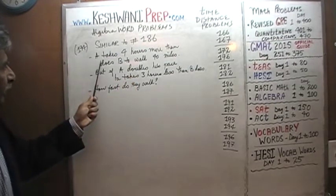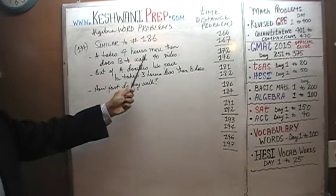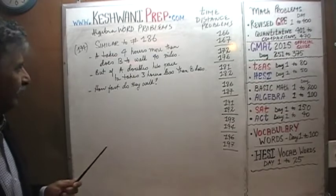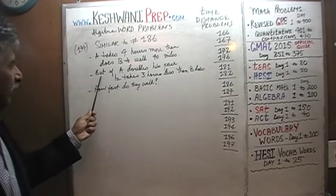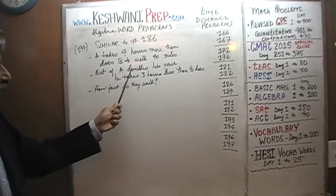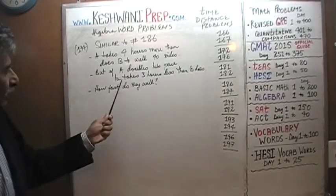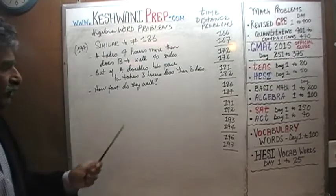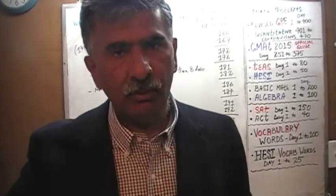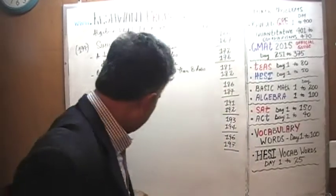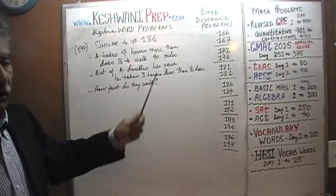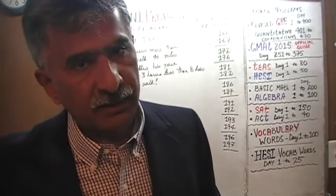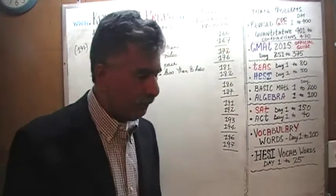We are told that A takes four hours more than B does to walk 40 miles. They're both walking 40 miles — A takes four hours longer. But if A were to double his speed, he takes three hours less than B does. The question is simply: how fast are they walking?